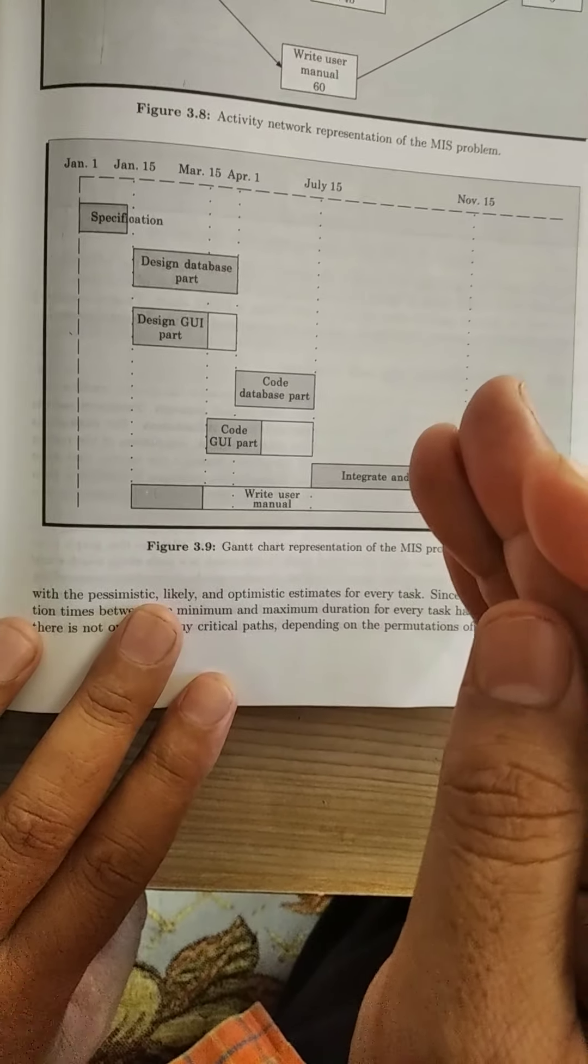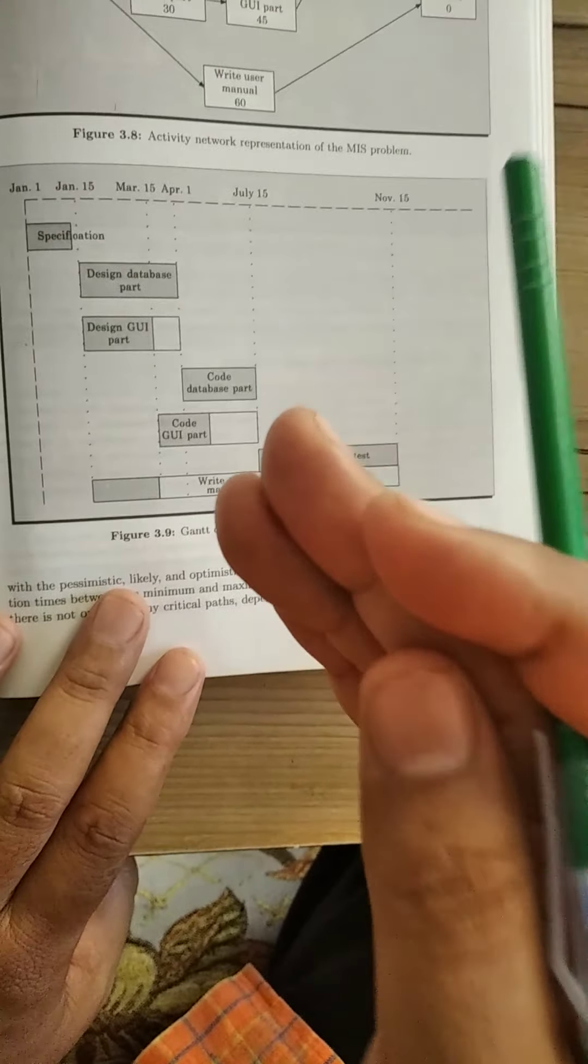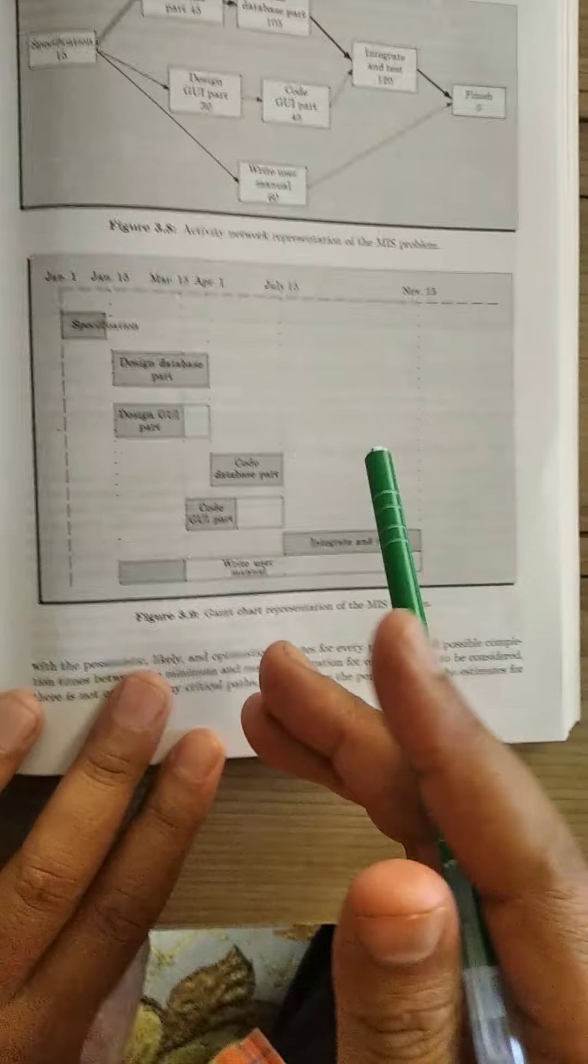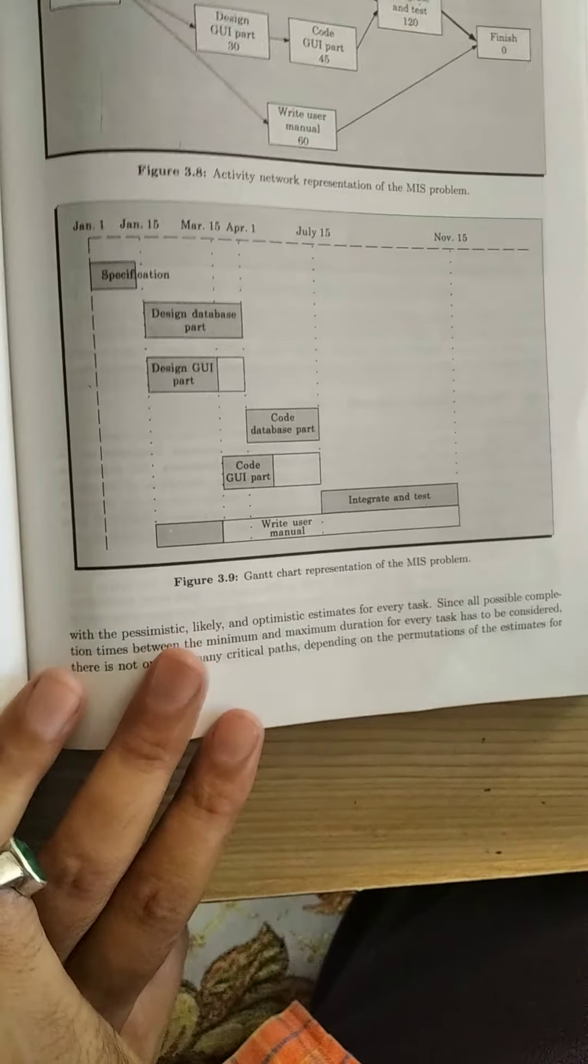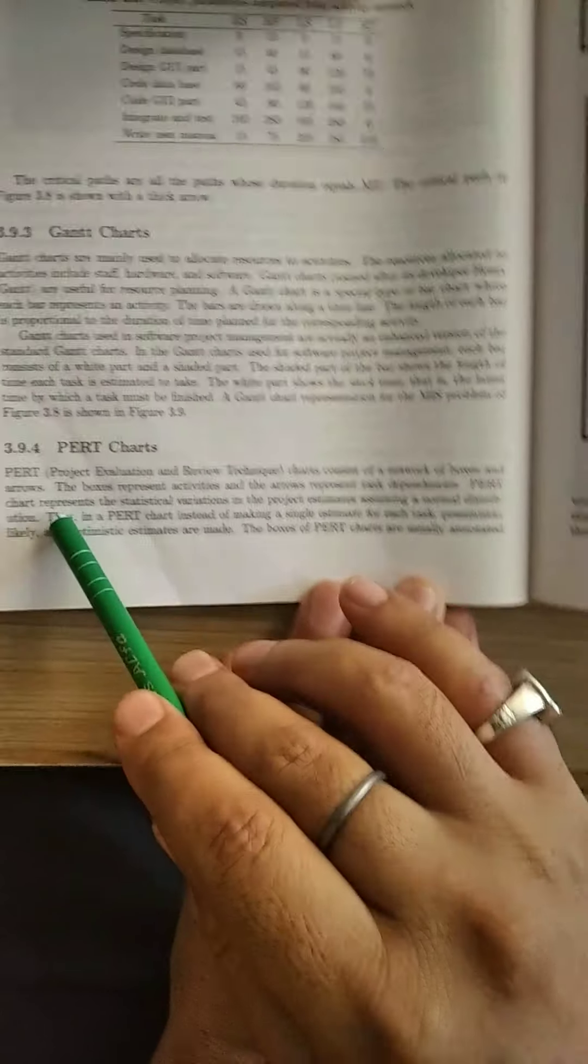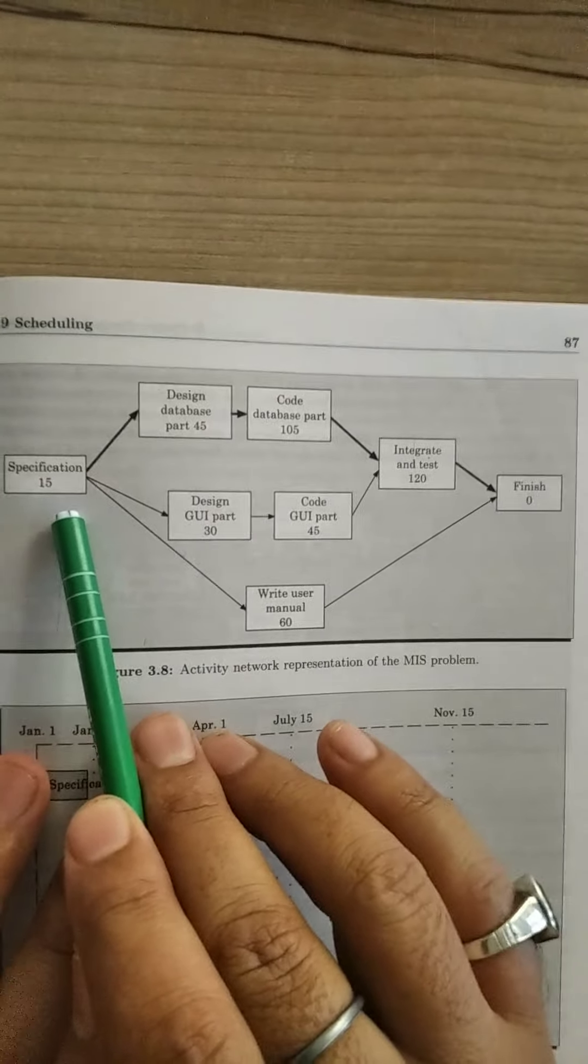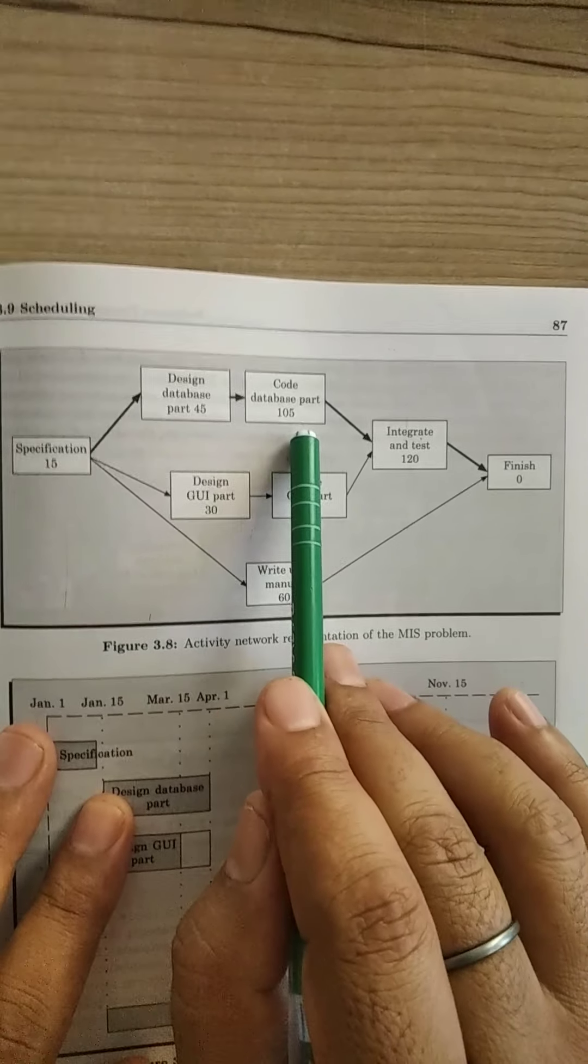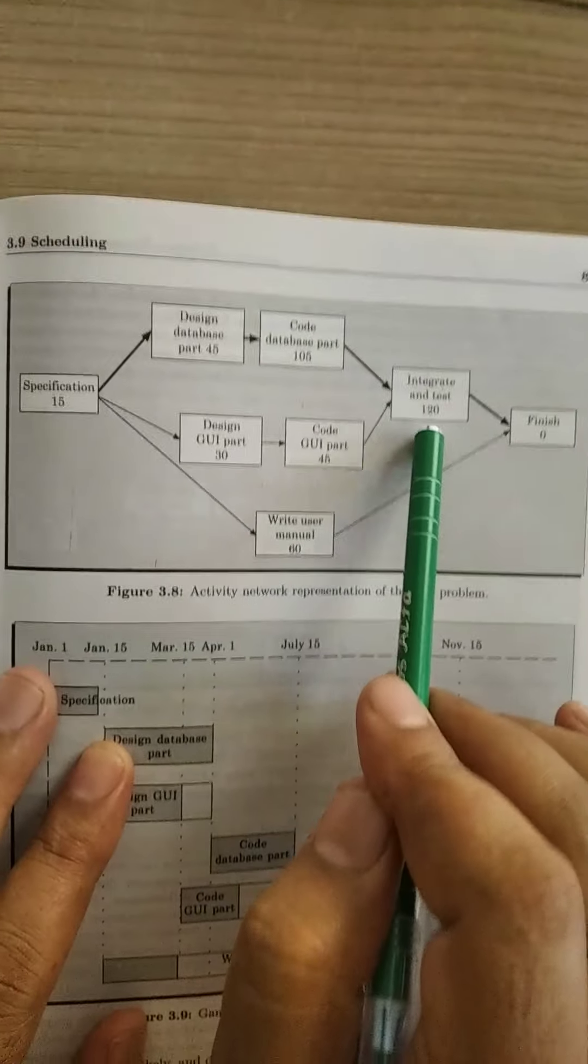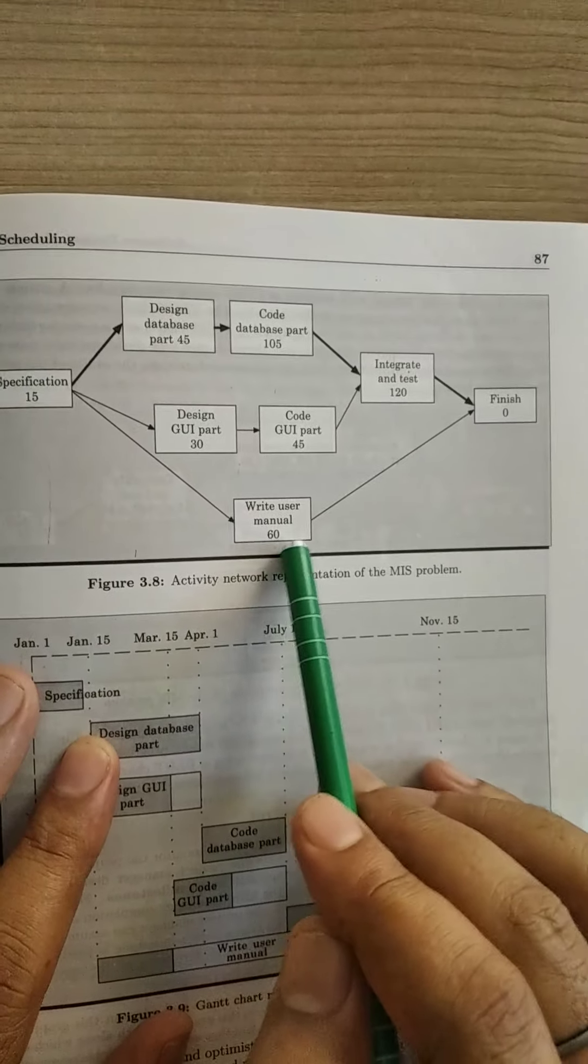Second is the activity network using PERT chart. PERT chart is project evaluation and review technique. It consists of network of boxes and arrows. For example, here the same project activities are described: specification, design database part, code part, design database part, code part, integrate and test, finish, and in parallel write user manual.